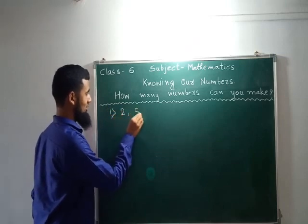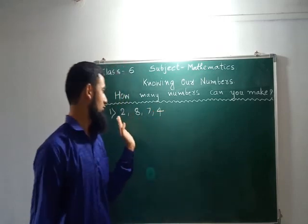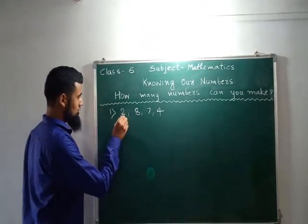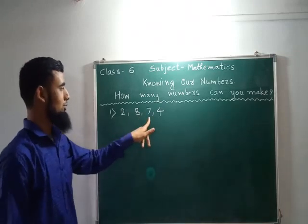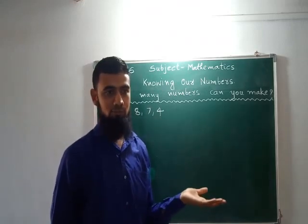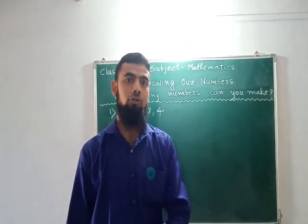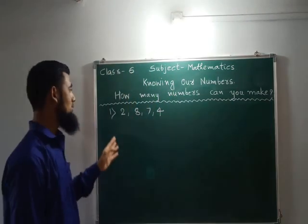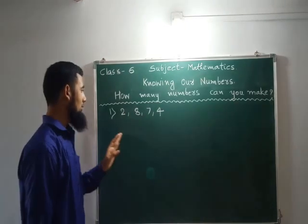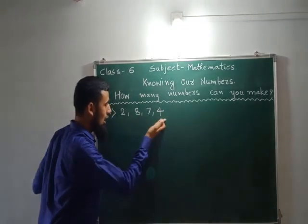2, 8, 7, 4. I have written four different numbers. 2 is a number, 8 is a number, 7 is a number, 4 is a number. You can make infinite numbers — not a single, not 2, not a lakh, not 10 crore. You can make infinite numbers using these digits. We will focus on how to make different numbers using these digits.